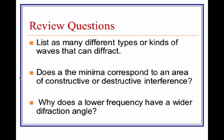Alright, a couple of quick review questions just to go over the video. First, I want you to list as many different types or kinds of waves that can diffract. Second, does the minimum, the angle that we are calculating, does that correspond to an area of constructive or destructive interference? You can find this earlier in the video or in the textbook. And why does a lower frequency have a wider diffraction angle? Thank you very much. Have a good night. See you tomorrow in class.